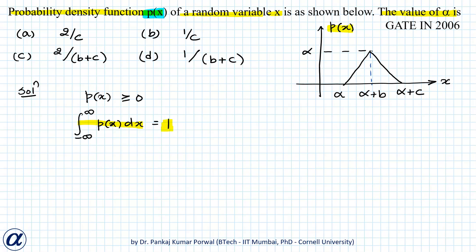Here we see that p(x) is a triangular function which is always positive, so this condition is satisfied. The second condition is area under the curve equals one.